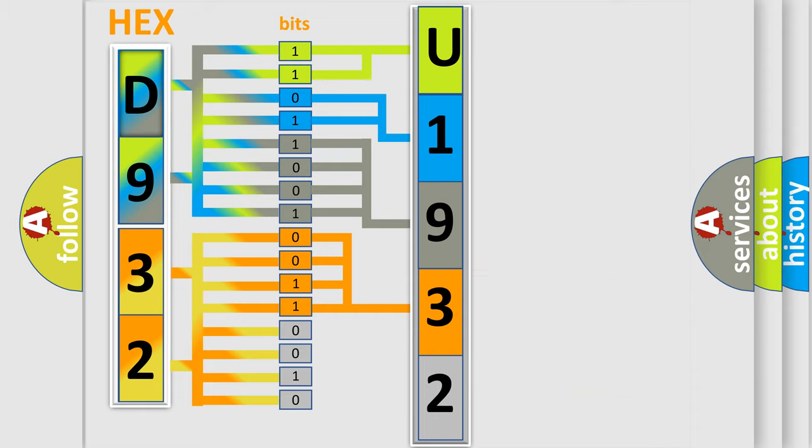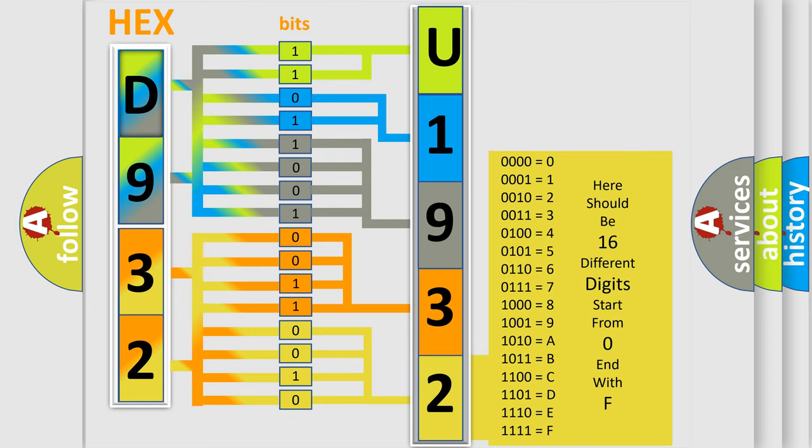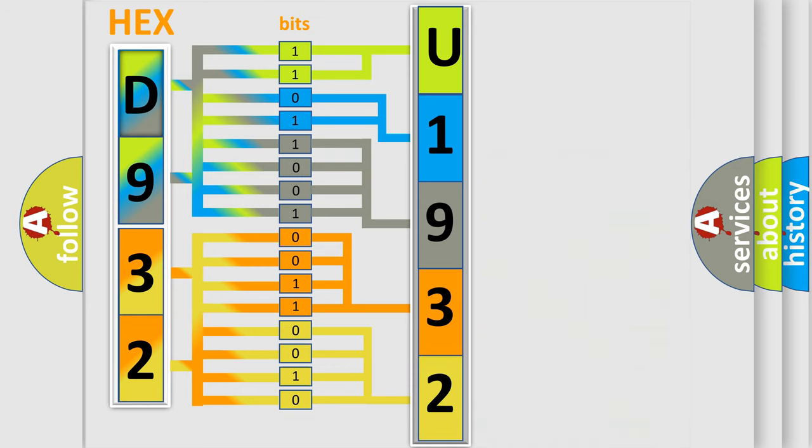A single byte conceals 256 possible combinations. We now know in what way the diagnostic tool translates the received information into a more comprehensible format.